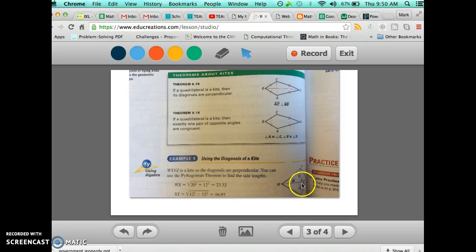This squared plus this squared will equal this squared. So you find 20 squared plus 12 squared. It's 400. 20 squared is 400. 12 squared is 144. And the square root of 400 plus 144 turns out to be about 23.32.